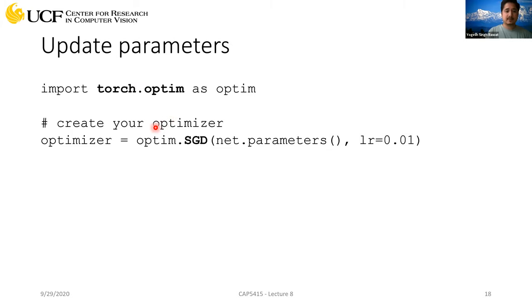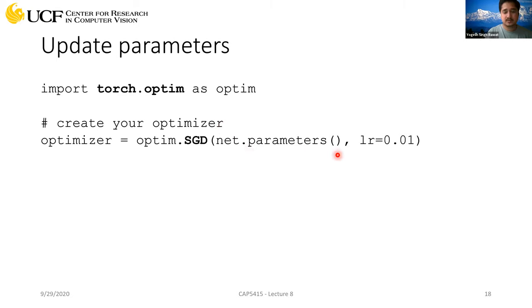Once you have the gradients, that's just gradient computation — you haven't yet updated your weights. To update weights you need an optimization algorithm. We discussed gradient descent and SGD (stochastic gradient descent). You define an optimizer using torch.optim.SGD, passing net.parameters() which gives all trainable parameters, and a learning rate. The SGD update rule: X = X − (learning_rate × gradient).